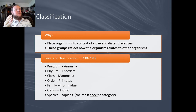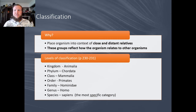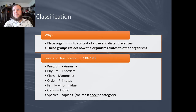Classification: why do we do this? We place organisms in the context of close and distant relatives so we can see how different species are related. The levels of classification, briefly, are kingdom, phylum, class, order, family, genus, and species. Here we have the classification for human beings. What we'll be really focused on is genus and species when we talk about primates, and we'll also talk about families and orders to a certain extent.